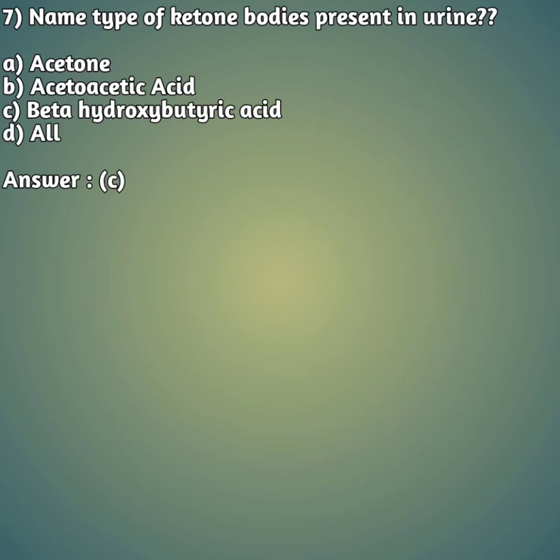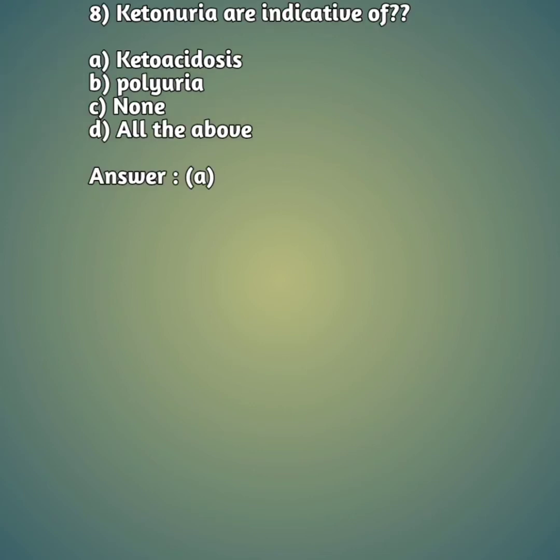Eighth question: ketonuria is indicative of what? Option A: ketoacidosis, option B: polyuria, option C: none, option D: all of the above. Your answer is option A — ketonuria is indicative of ketoacidosis.